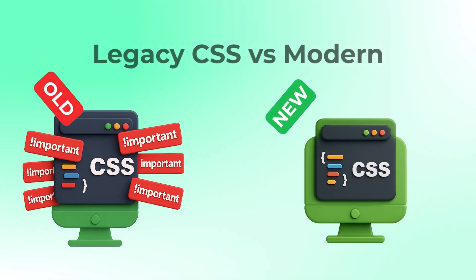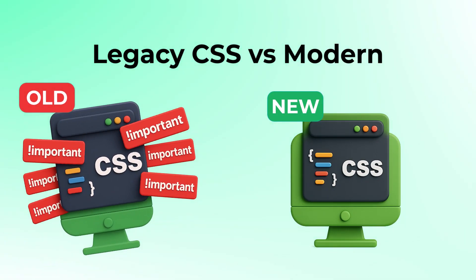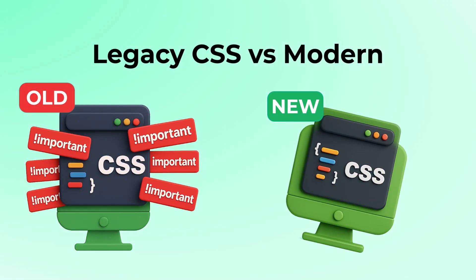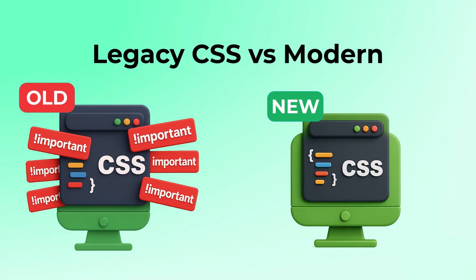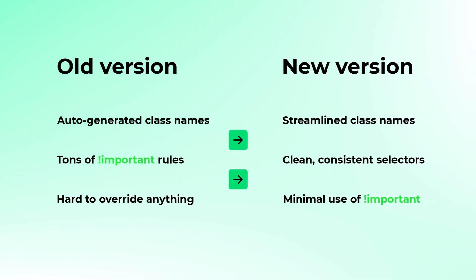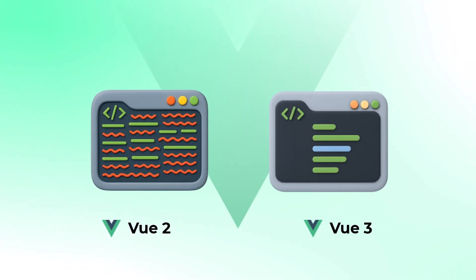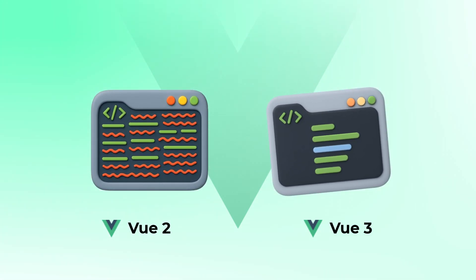The previous version relied on auto-generated classes and excessive use of important keywords, which made customizing the theme a challenge. In this update we've minimized these issues. Now you can easily tweak spacing, colors, or layouts without fighting the plugin's CSS. The default design remains sleek and modern, but customization is much more straightforward.